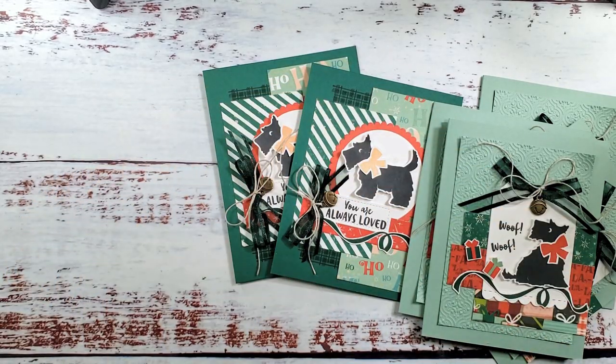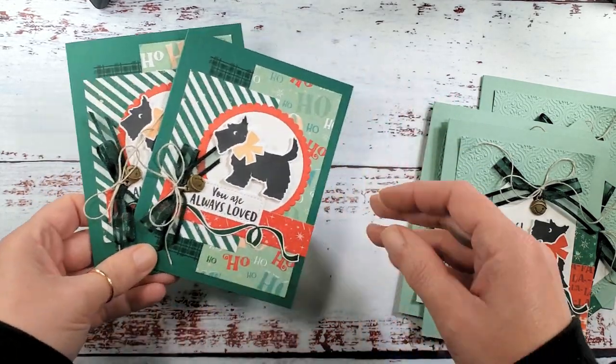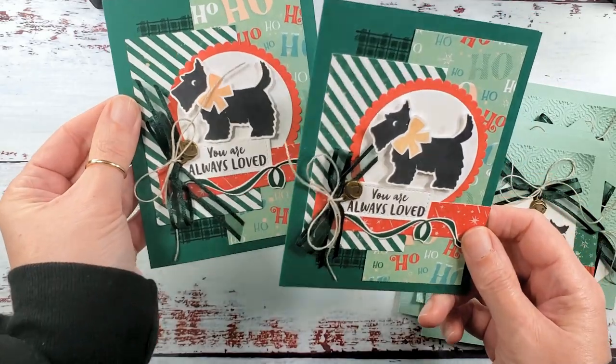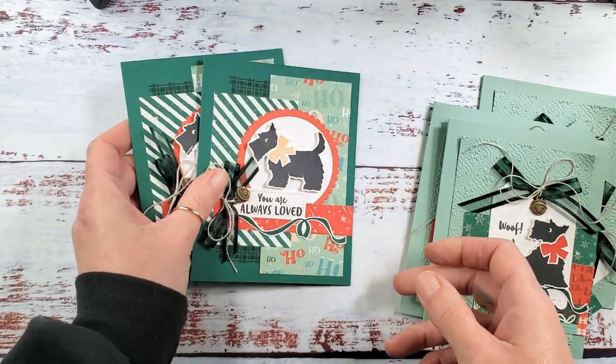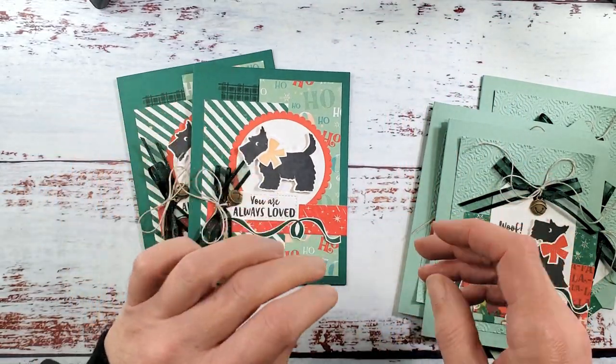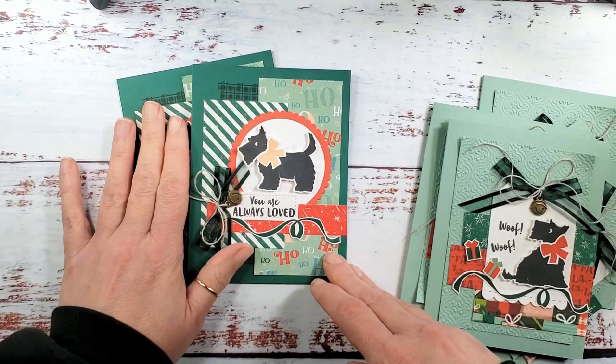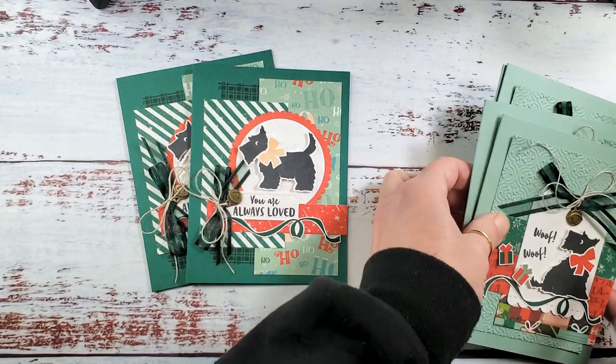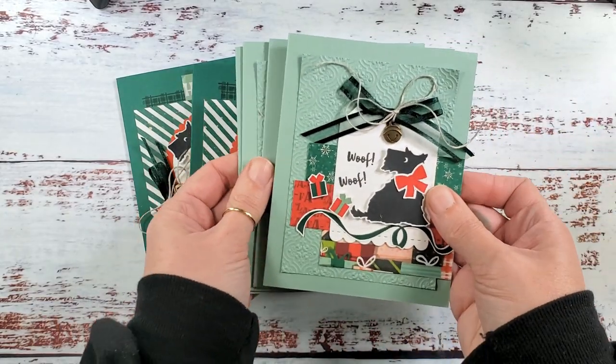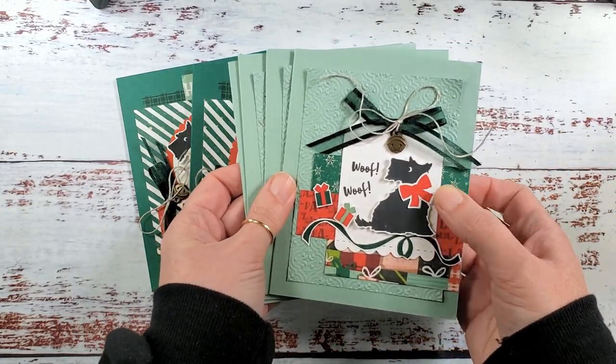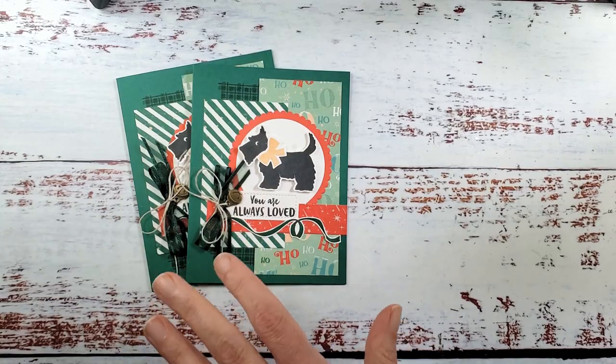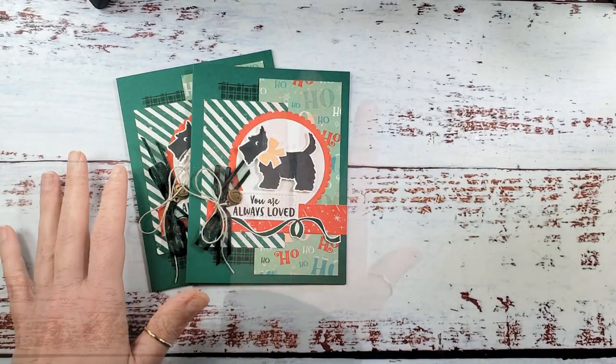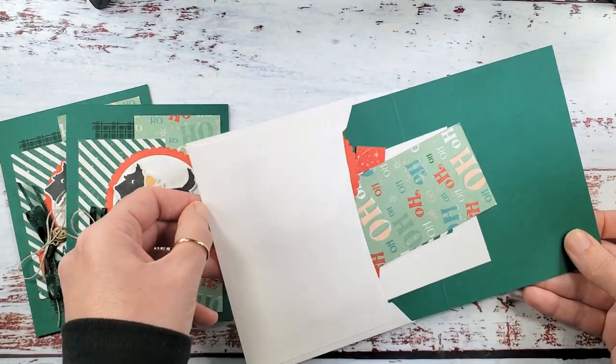Video number two is our first design, this awesome petal pink card. Now we are on video number three where we're going to make this shaded spruce. There is an optional stamp-a-stack packet and when you use that packet the packet makes two of this design. Let's get going with our shaded spruce here. Pick it up right where we left off.